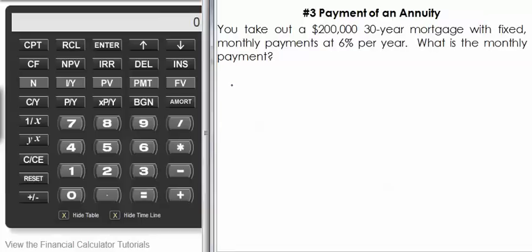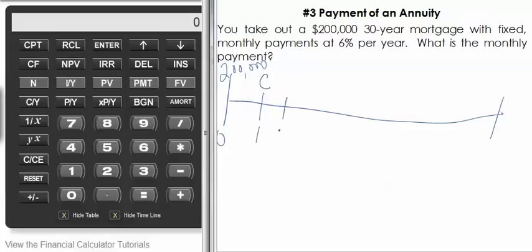You take out a $200,000 mortgage in which you have to make monthly payments for 30 years. We want to find out what the payment will be, so we know that the present value is $200,000. And we want to find what are these payments all the way up to period 360.